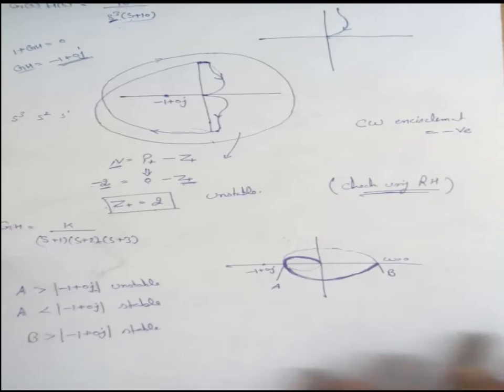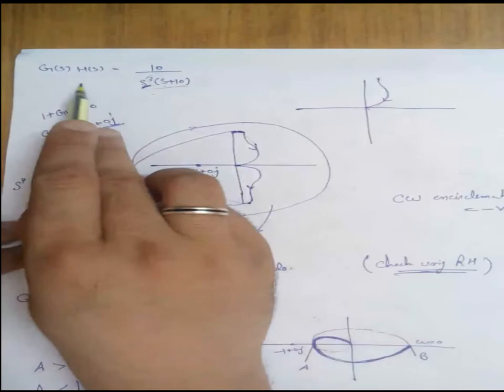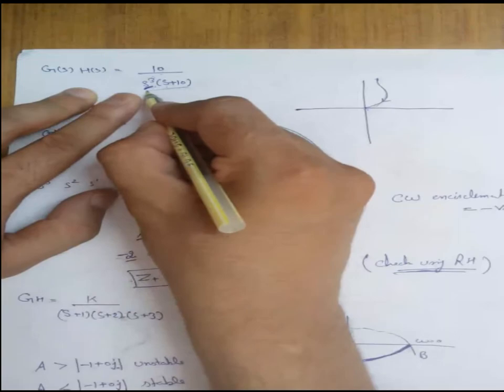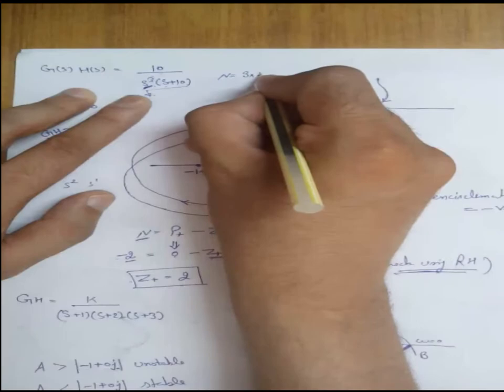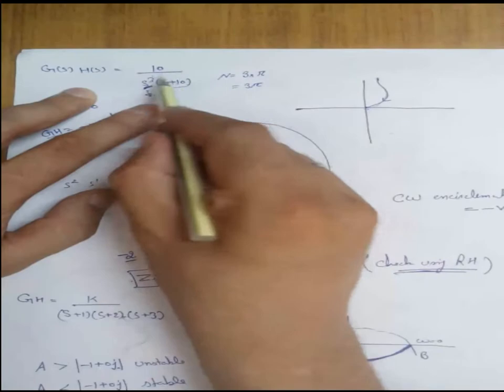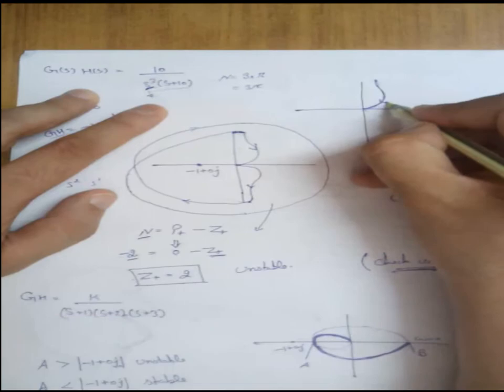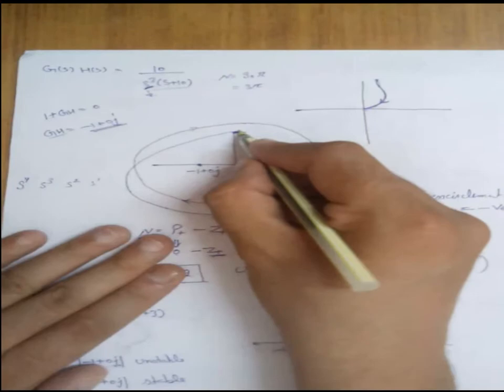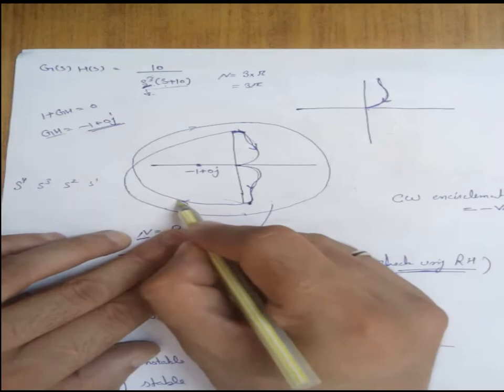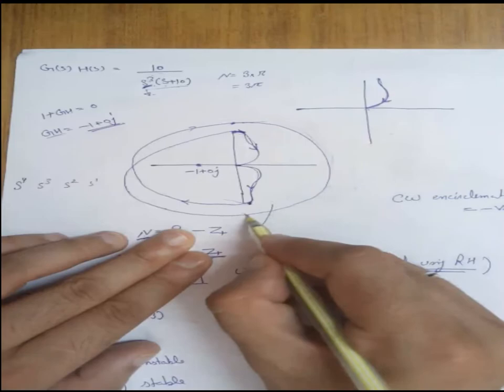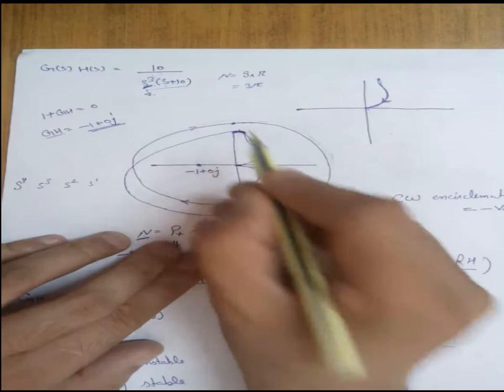Another example: GS·HS = 10/(S³(S+10)). Here there are three poles in the open loop transfer function, so the number of encirclements equals 3π. The polar plot for this system is drawn, then its mirror image. Starting encirclement from the end point of the mirror image, going clockwise: first π, then 2π, then 3π. This endpoint is then connected to the starting point of the polar plot. This completes the Nyquist plot for this system.